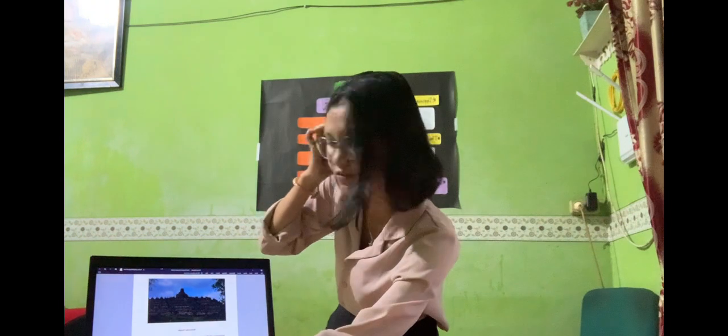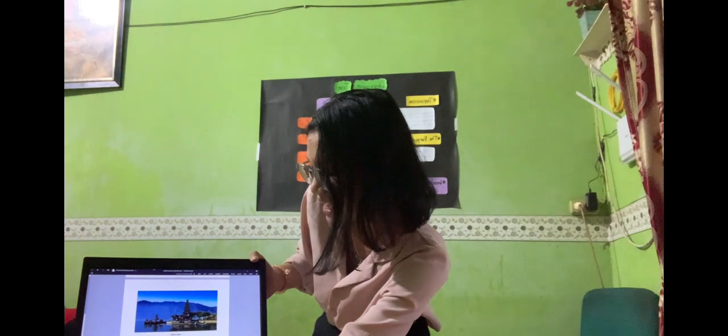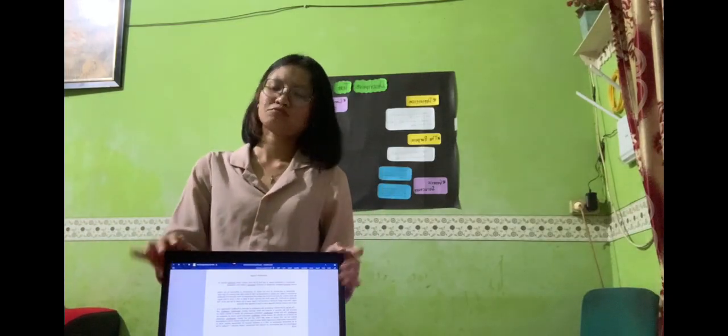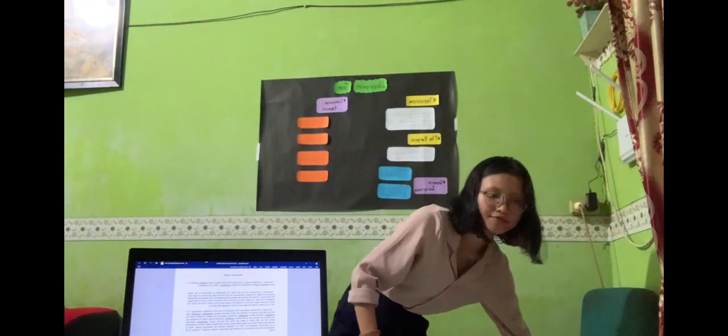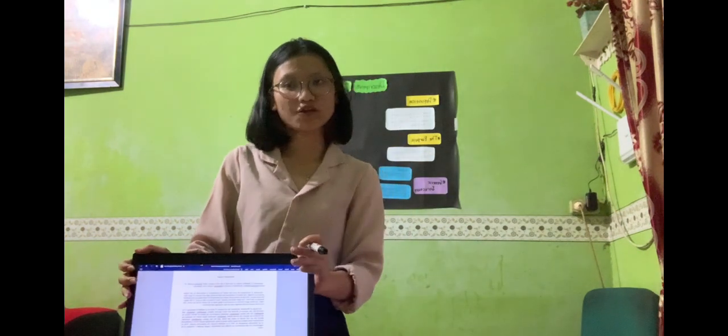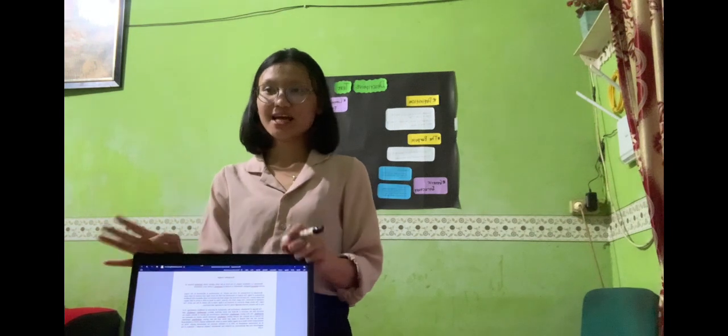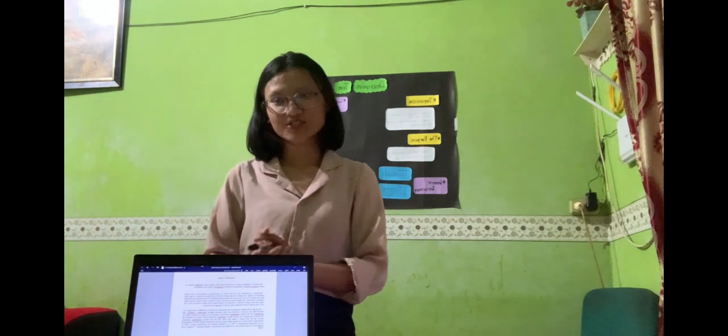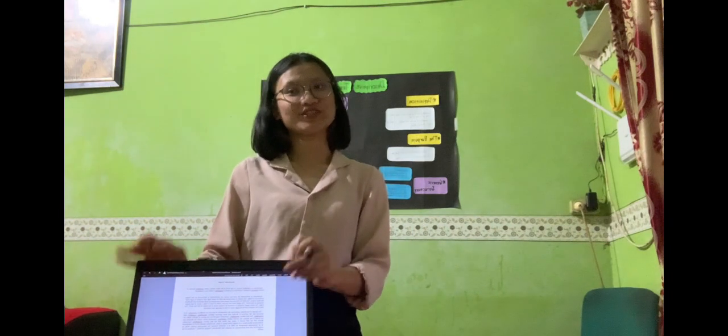So now guys, I want to show you some examples of descriptive text. Here it is. The first one is the descriptive text about Borobudur Temple and the second is the descriptive text about Bali Island. I'll give you some minutes to read this descriptive text. Have you finished? I want to ask you — what is the purpose of this text? Yes, Anissa? Good. The purpose is to describe Borobudur Temple. Right, good. Give a clap to Anissa, please.